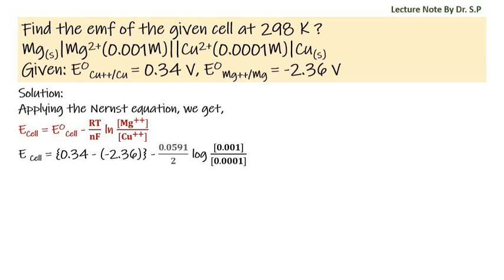Here the value of RT by F into 2.303 is 0.0591.